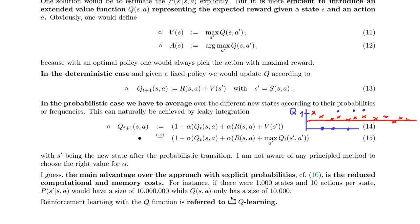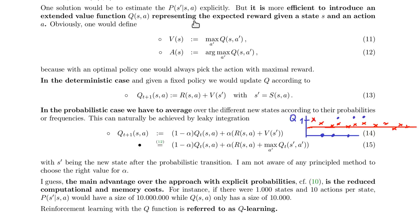Using the Q-value is more efficient than estimating the transition probabilities P. With 1,000 states and 10 actions, estimating probabilities requires 10,000 × 1,000 × 10 = 100 million entries, whereas Q only has variables S and A — 10,000 values rather than millions. That is a big difference, so Q-learning is much more efficient.